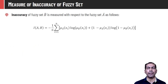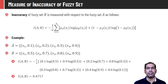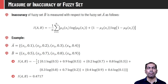Inaccuracy of a fuzzy set is measured with respect to some other set. The inaccuracy of fuzzy set B measured with respect to set A is given as: I(A, B) = −(1/n) × summation over 1 to n of [μ_A(x_i) × log(μ_B(x_i)) + (1 − μ_A(x_i)) × log(1 − μ_B(x_i))]. Entropy is measured with the set itself, whereas inaccuracy is measured with respect to some other set. Considering two sets A and B as shown, the inaccuracy turns out to be 0.4717. Inaccuracy tells us how one set differs from another, or how the membership values of set B differ from those of set A.